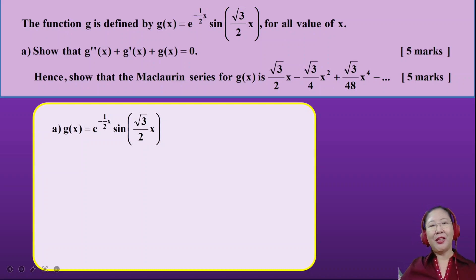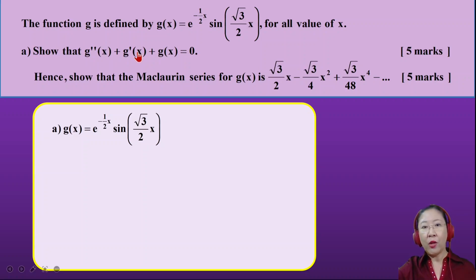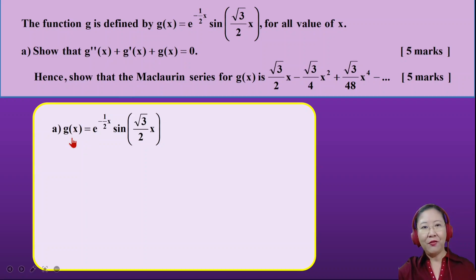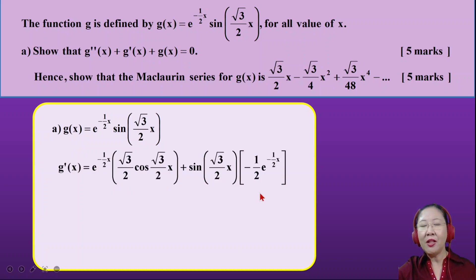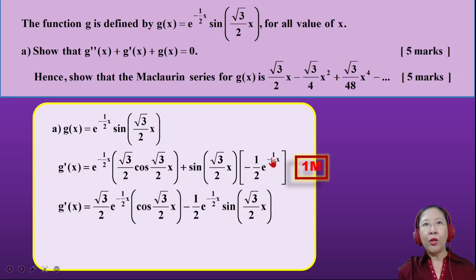In the first part of the question, we have to first determine what type of Maclaurin theorem or standard series we are going to use to solve this question. They gave you an equation and asked you to derive — to show the differentiation of G double prime and G prime. That is the second derivative and the first derivative, and they want to show that all of this is zero. So to start, we need to differentiate the equation they gave you, which is G(x). Let's differentiate it first — that is your G first derivative — and you will get one mark for that.